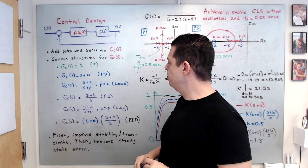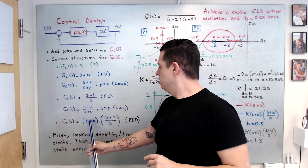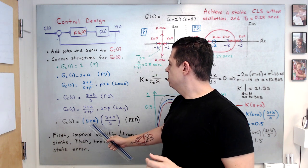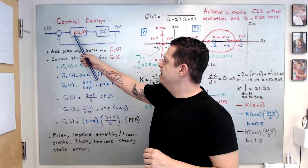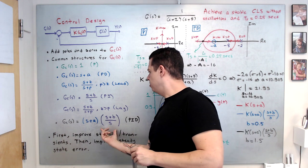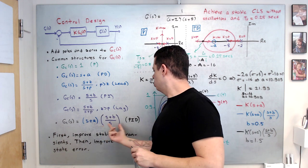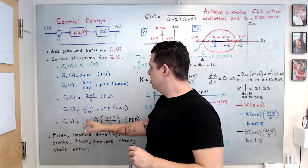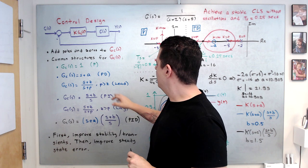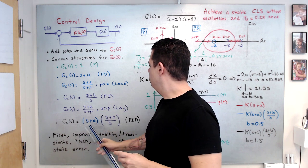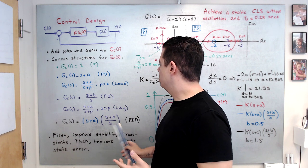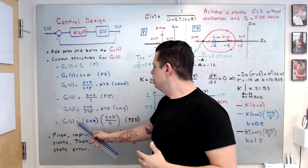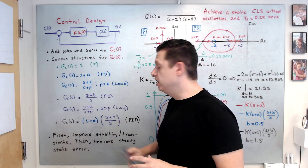For example, first use PD to improve stability, transients, and settling time — choosing a and gain k using root locus. Then add the PI portion, giving you PID. You can also first design lead, then lag, giving a lead-lag structure. You can combine PD and lag, or lead and PI. To combine them, just multiply them with each other.